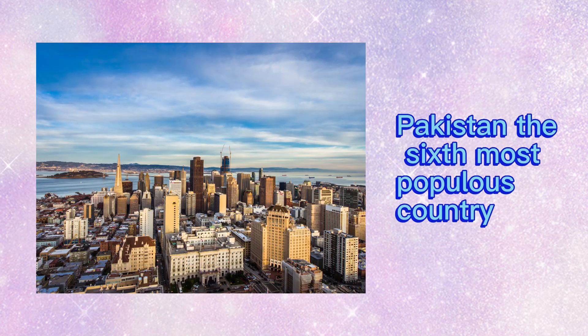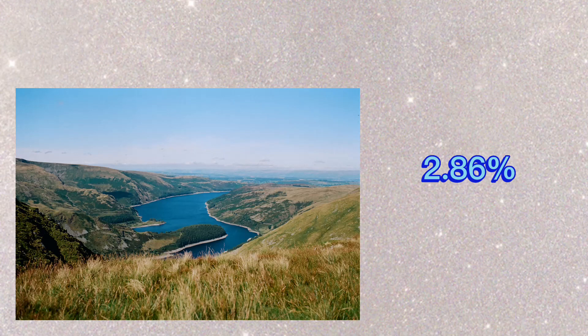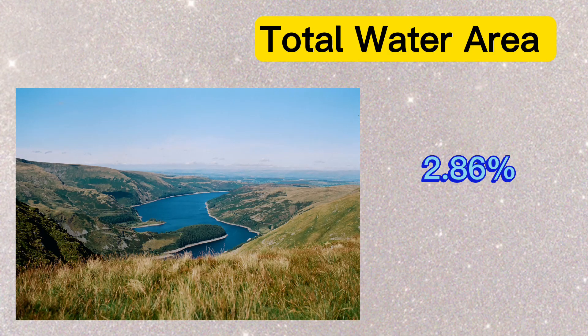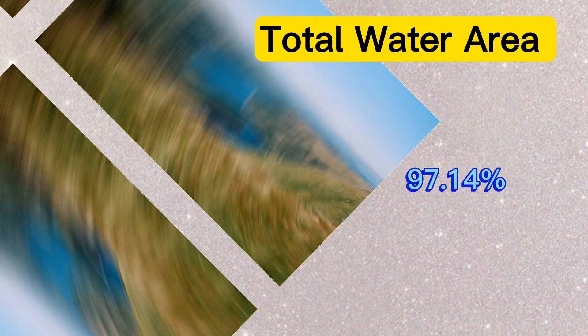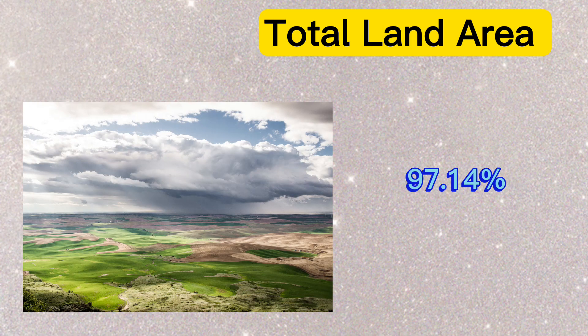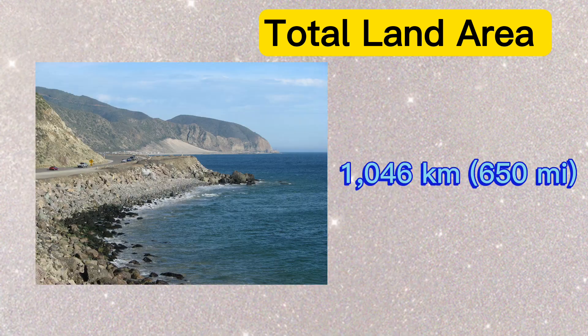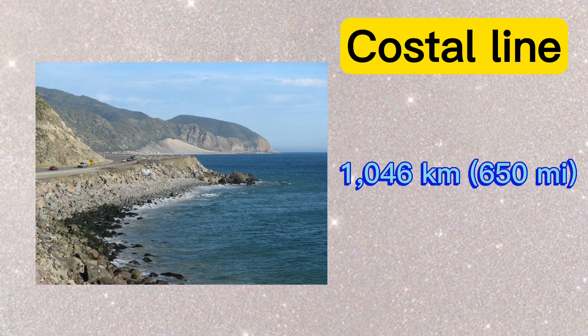Pakistan is the sixth most populous country. Total water area: 2.86%. Total land area: 97.14%. Coastline: 1,046 kilometers, or 650 miles.